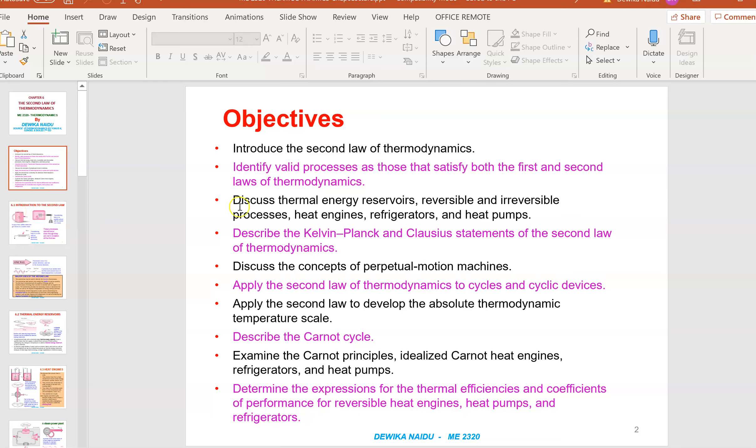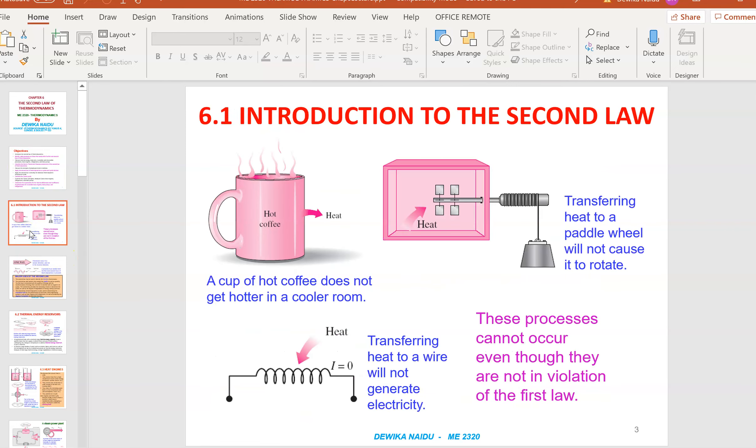In this first lesson, I will be covering 6.1 to 6.3, which means right up to describe the Kelvin-Planck and Clausius statement of the second law of thermodynamics. As for 6.1, what is the second law of thermodynamics? The second law says that energy can go in a certain direction. Unlike the first law, which says that energy is conserved, the second law defines the quality of energy itself.